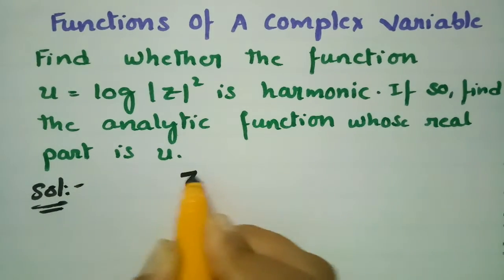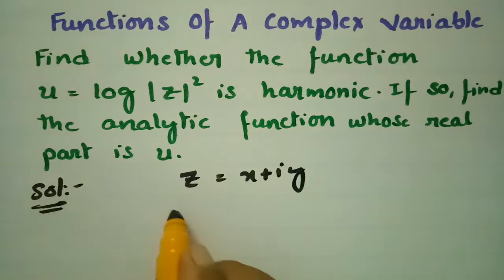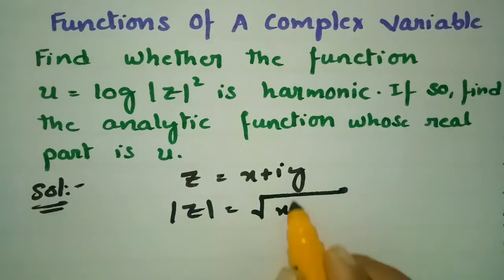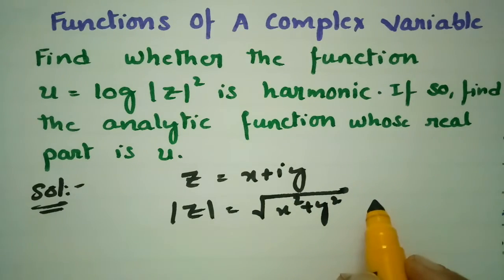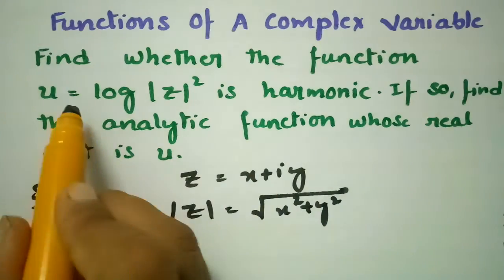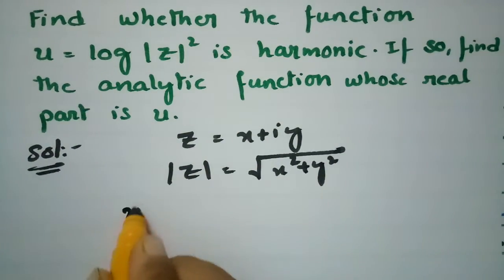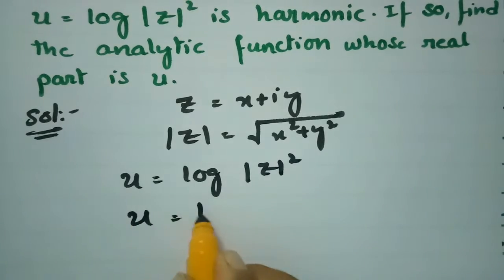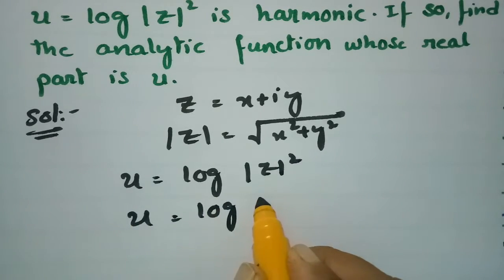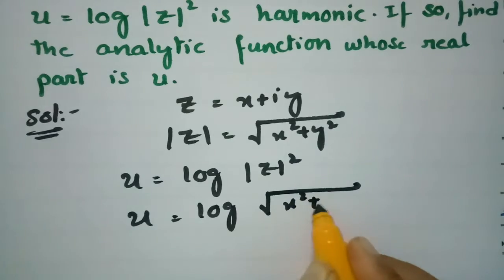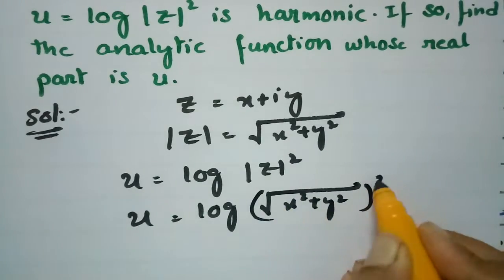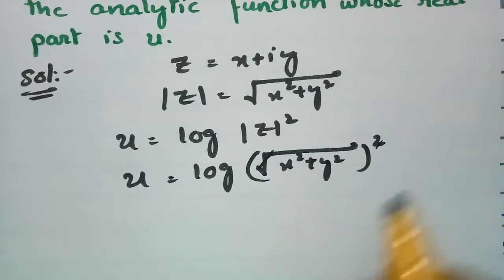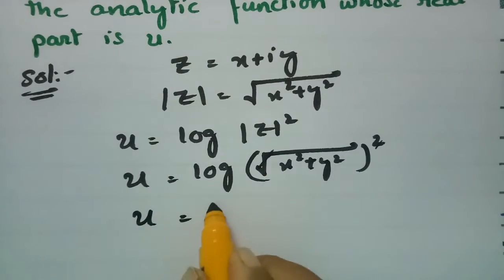First of all, z = x + iy, so modulus of z is nothing but √(x² + y²). Now u is given as log of |z|², which is log of (√(x² + y²))². If I cancel the root and the square, then u = log(x² + y²).